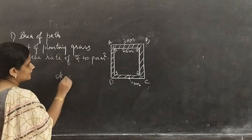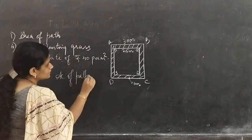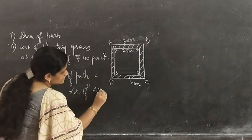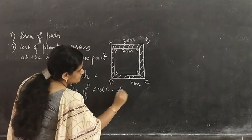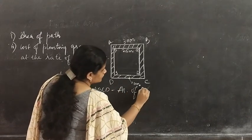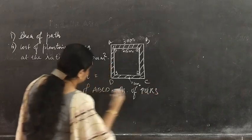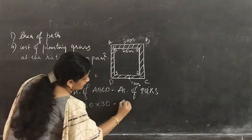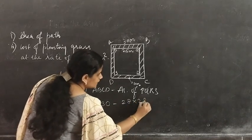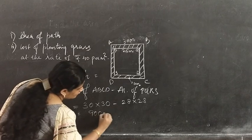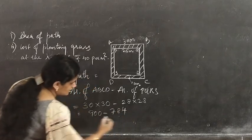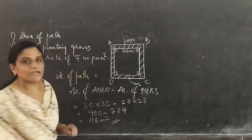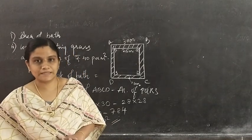Area of path equals area of square ABCD minus area of square PQRS. That is 30 into 30 minus 28 into 28, which gives 900 minus 784, that is 116 metre square. This is the area of the path.